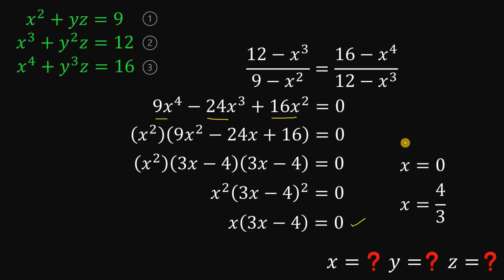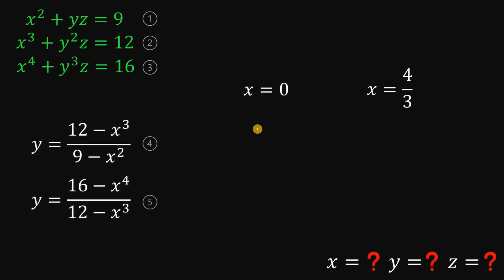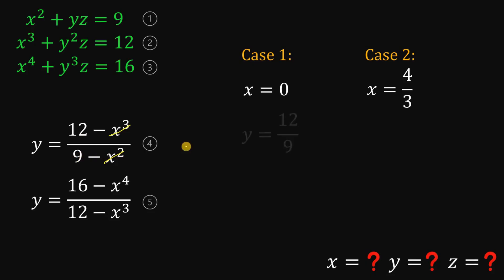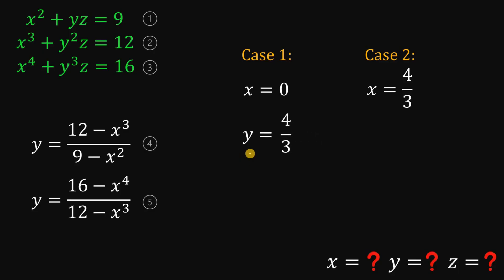Solving this equation, we found two possible cases. The first case is when x equals 0. Using equation 4 with x equals 0, we get y equals 12 over 9, which simplifies to 4 over 3. So when x is 0, y equals 4 over 3. To solve for z, using equation 1, 2, or 3, we get z equals 27 over 4.